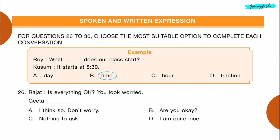Spoken and Written Expression: For questions 26 to 30, choose the most suitable option to complete each conversation. Example — Roy: What dash does our class start? Kusum: It starts at 8:30. Option B: time.